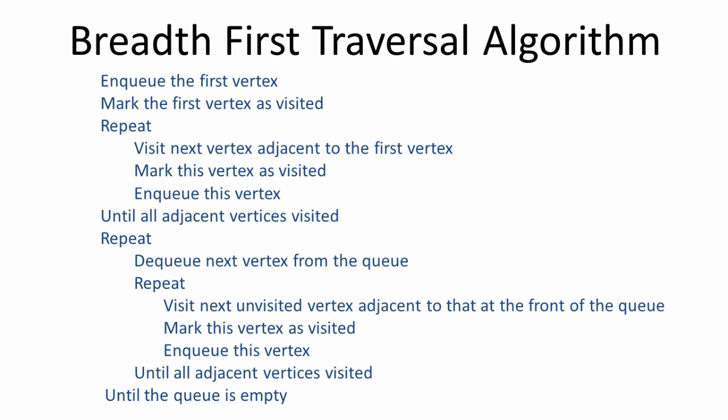Here's an algorithm for the breadth-first traversal of a graph. We enqueue the first vertex, mark it as visited, and then we visit every vertex adjacent to it, marking them as visited and enqueuing them as we go. Once we've visited all the vertices adjacent to the first vertex, we start dequeuing, and as we do so, we visit the next unvisited vertex adjacent to the one at the front of the queue, marking as visited and enqueuing as we go. We repeat this until all of the adjacent vertices are visited, and we continue in this way until the queue is empty.